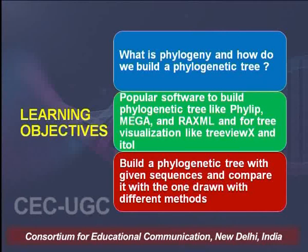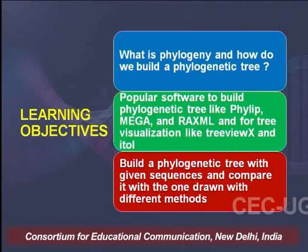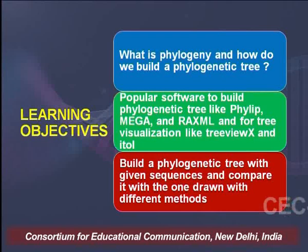With this background — knowing everything about multiple sequence alignment and having run it with a few sequences — today we will try to build a phylogenetic tree with the sequences we have. The learning objective in today's lecture is: what is phylogeny and how do we build a phylogenetic tree? We will look at popular softwares used for building phylogenetic trees, like MEGA and RAxML, and tree-viewing softwares like TreeViewX and iTOL.